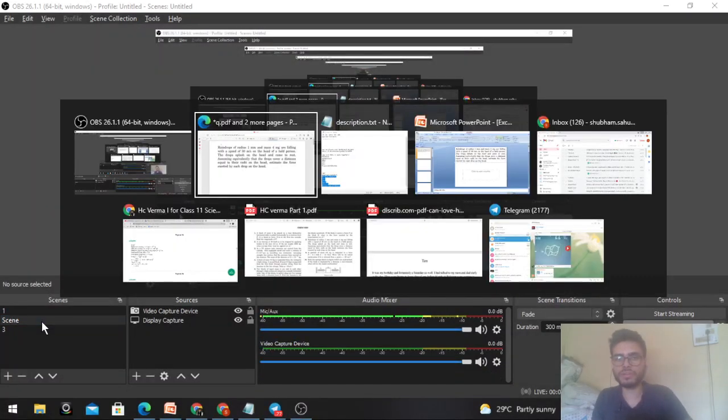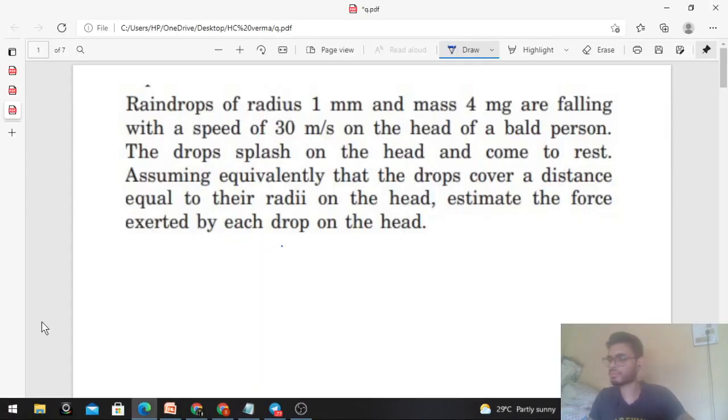Okay, hi everyone. Today we will discuss one interesting problem from HC Verma. Raindrops of radius 1 mm and mass 4 mg are falling with a speed of 30 meter per second on the head of a bald person. The drops splash on the head and come to rest. Assuming equivalently that the drops cover a distance equal to their radius on the head, estimate the force exerted by each drop on the head.